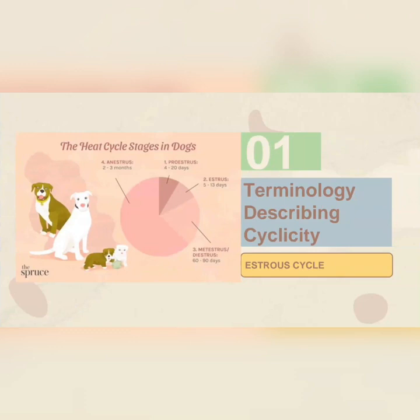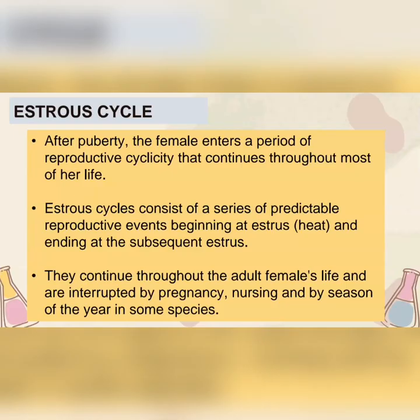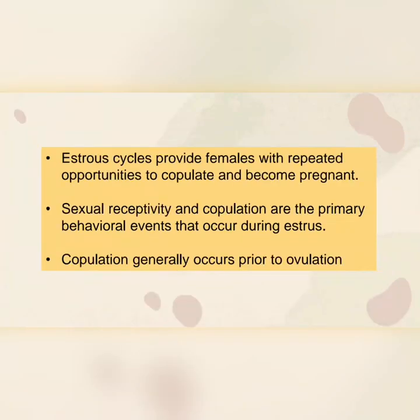For the first part, the terminology describing cyclicity — in this section, we will only focus on the terms associated with the estrous cycle. After puberty, the female enters a period of reproductive cyclicity that continues throughout most of her life. Estrous cycles consist of a series of predictable reproductive events beginning at estrus, or commonly termed as heat, and ending at the subsequent estrus. They continue throughout the adult female's life and are interrupted by pregnancy, nursing, and by season of the year in some species. Estrous cycles provide females with repeated opportunities to copulate and become pregnant.